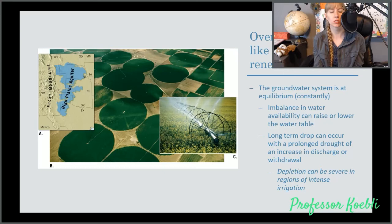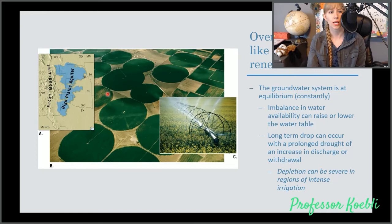Depletion can be severe in regions of intense irrigation such as in the Midwest where we have a lot of farms trying to create large amounts of crops over a short period of time. This particularly happens in the area known as the Basin and Range region and to the east of the Rockies in Texas, Oklahoma, Kansas, and Nevada where it's drier.